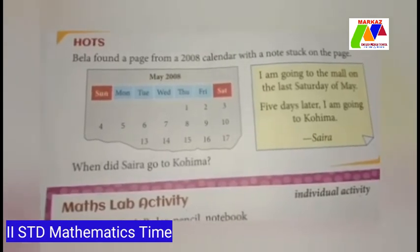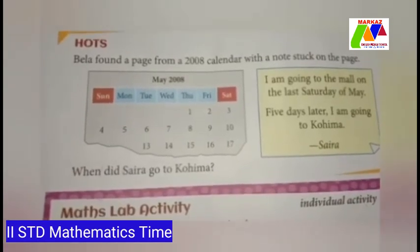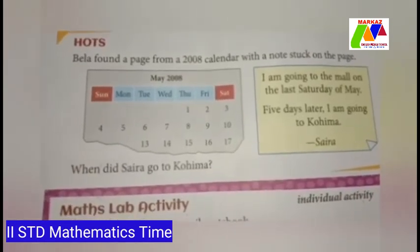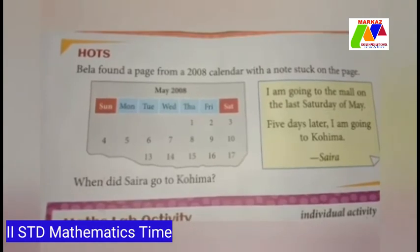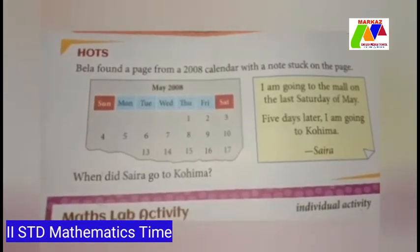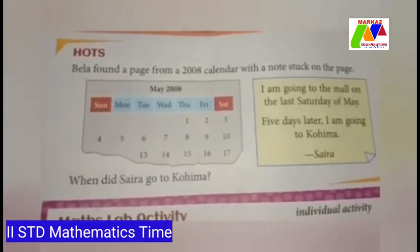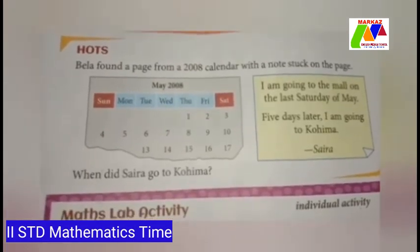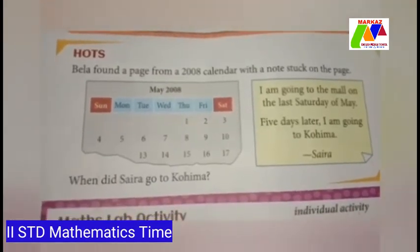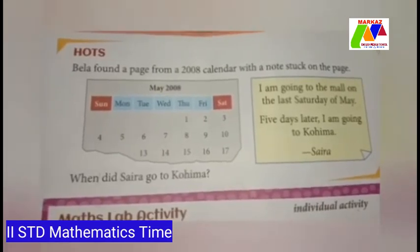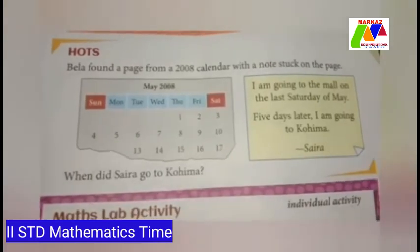Next, Bella found a page from a 2008 calendar with a note: 'I am going to the mall on the last Saturday of May. 5 days later, I am going to Kohima.' When did Saira go to Kohima? In May there are 31 days, so the last Saturday of May is the 31st. Therefore, she went to Kohima on June 5.